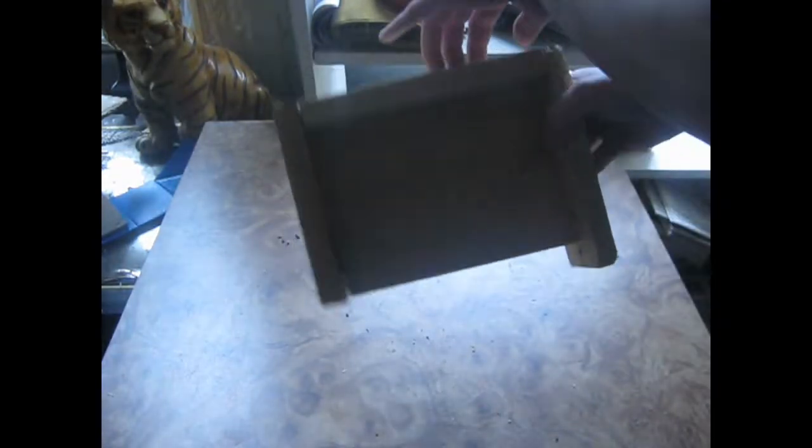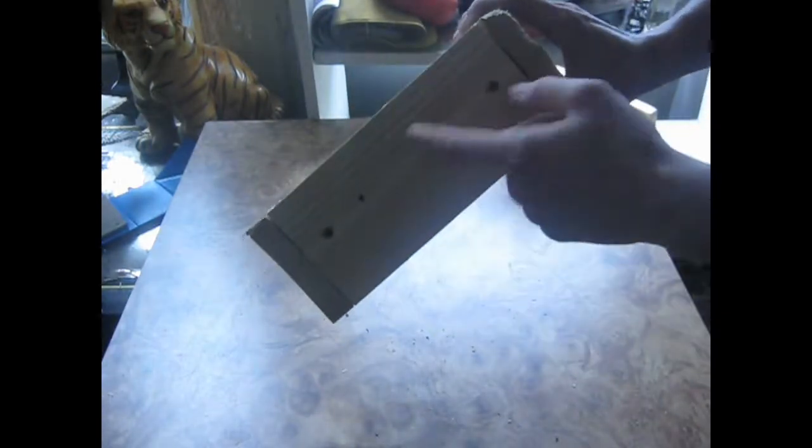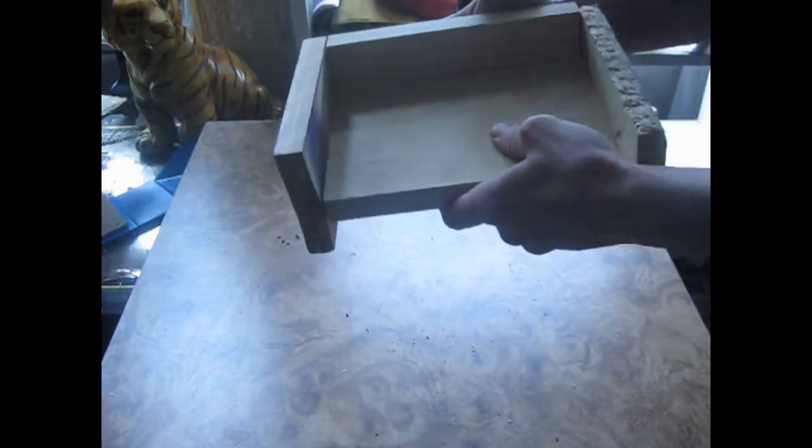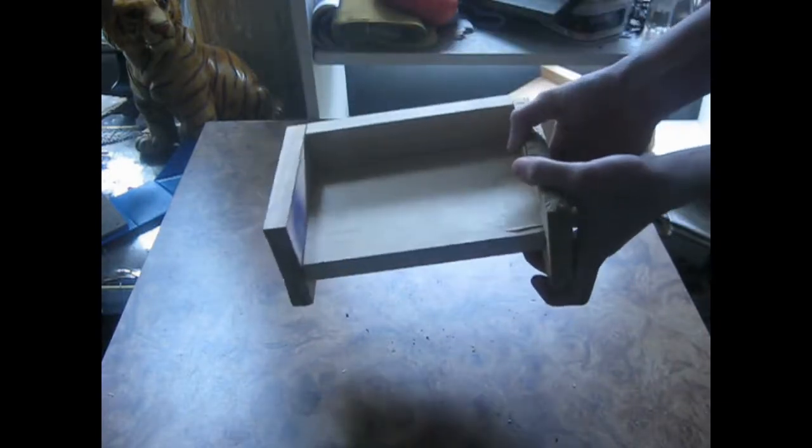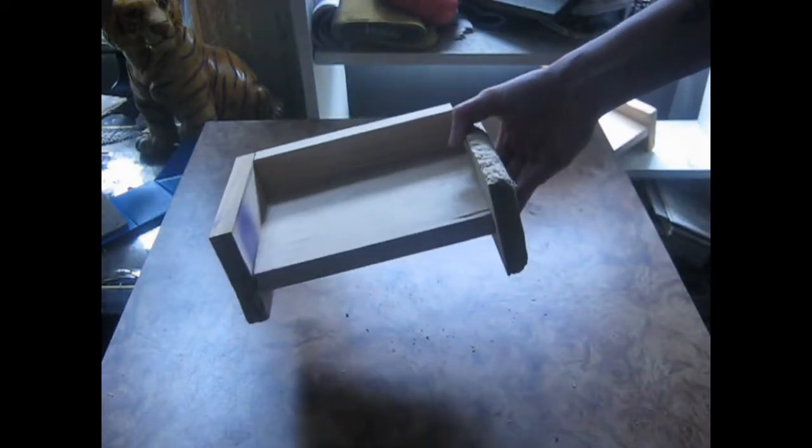And also once I put the bolts in, it will be more sturdy against the cage. So this is just a basic idea that you could freely copy to do for your cages if you want to build your own chinchilla ledges.